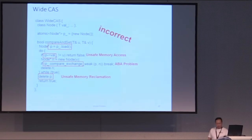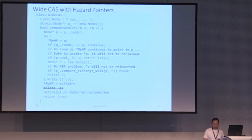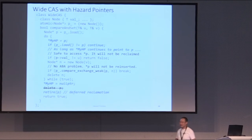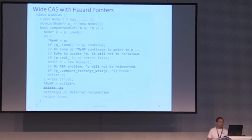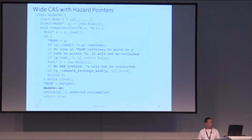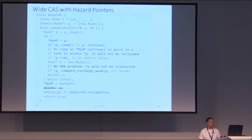From a reclamation side, threads retiring objects and wanting to reclaim them cannot do so right away. In the simplest form, they scan all the hazard pointers, and if the object's address doesn't appear, it's okay to free. In practice, you'd read all hazard pointers into a data structure with constant lookup time, and have a private list that's large enough to guarantee you'll reclaim something, since you'll never fail to reclaim more objects than the number of hazard pointers.